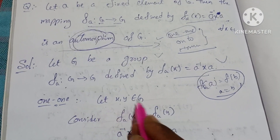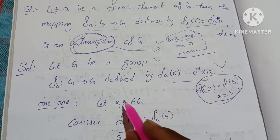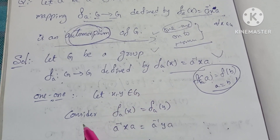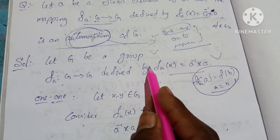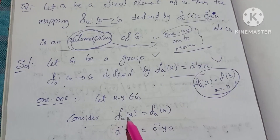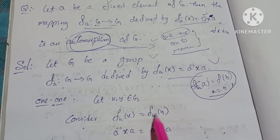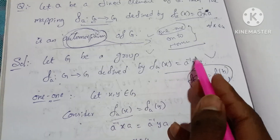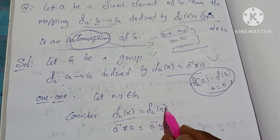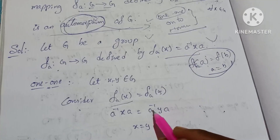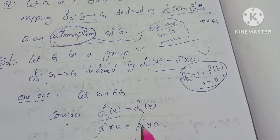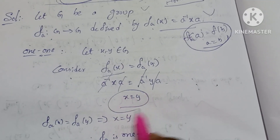Let x, y belong to G. Consider f_a(x) equal to f_a(y). So f_a(x) equals a inverse x a, and f_a(y) equals a inverse y a. By cancellation, a inverse cancels with a on both sides, giving us x equal to y.